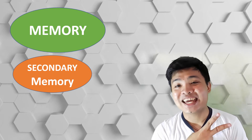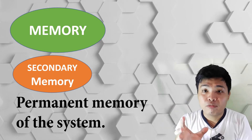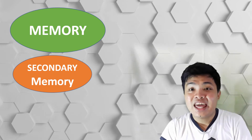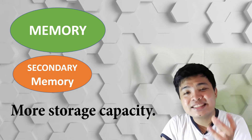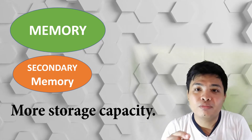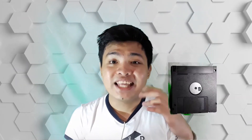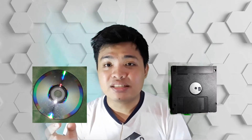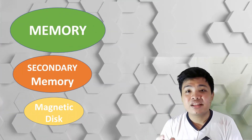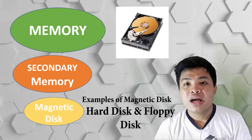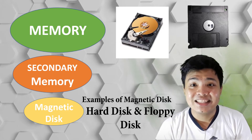From primary memory, we have secondary memory. Secondary memory is the permanent memory of the system. It has more storage capacity and serves as the backing storage of the computer. Examples of secondary memory include the magnetic disk and the optical disk. Magnetic disks store data in the form of magnetic direction, and hard disks and floppy disks are examples of magnetic disks.